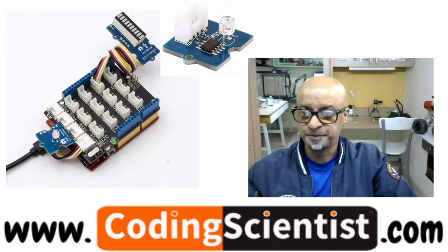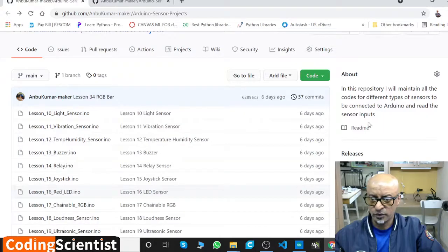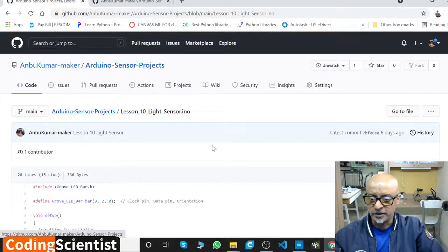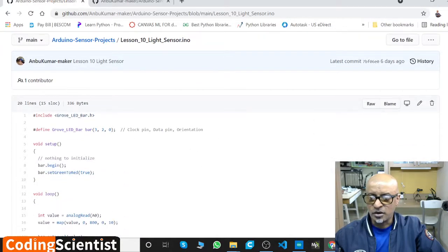If you go to GitHub, you need to go to Lesson 10 Light Sensor. If you click in here, this particular code also requires a library called Grove_LED_Bar.h.